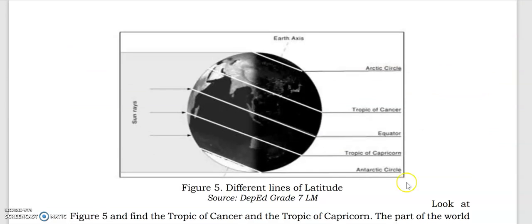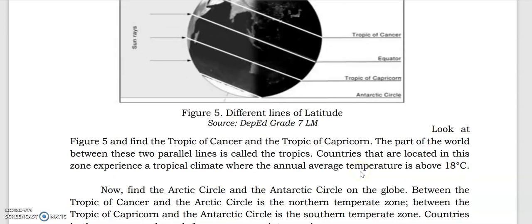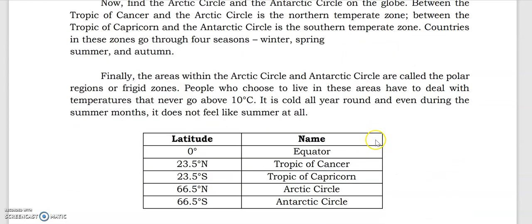Let's learn about the different lines of latitude. The Arctic Circle is located at approximately 66.5 degrees north. The Tropic of Cancer is at 23.5 degrees north from the equator, which is zero degrees. The Tropic of Capricorn is at 23.5 degrees south, and the Antarctic Circle is at 66.5 degrees south. Those are the different lines of latitude.